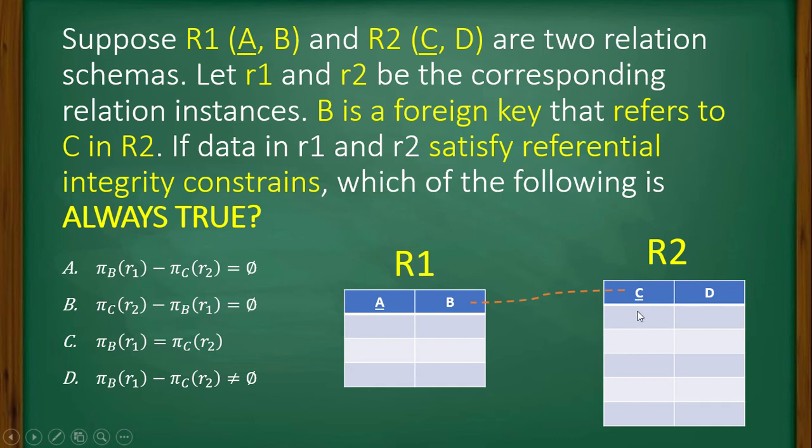So C may have, or in R2, C may have n number of entries or n number of values. But in B, it may have less than or equal to n number of values.